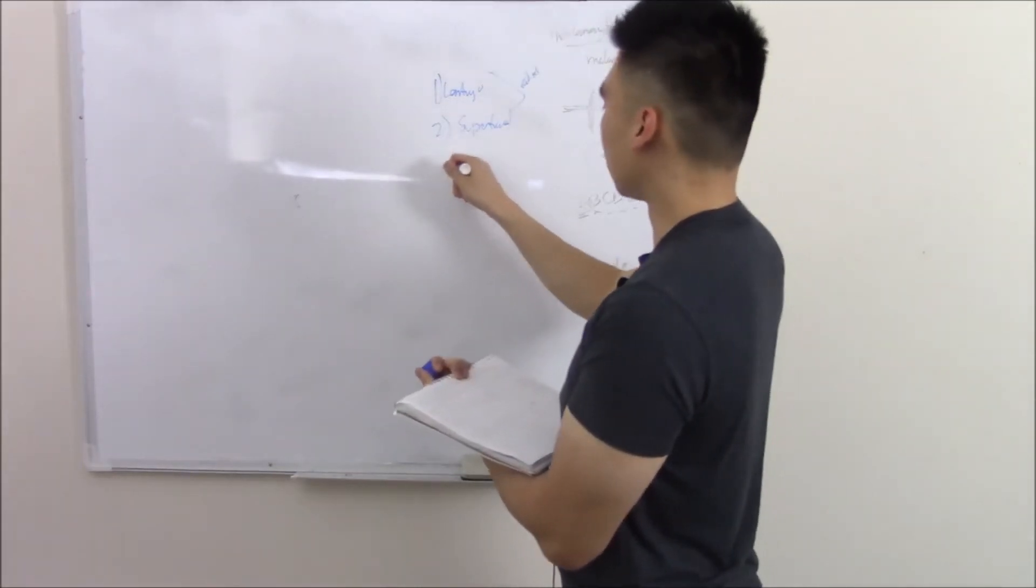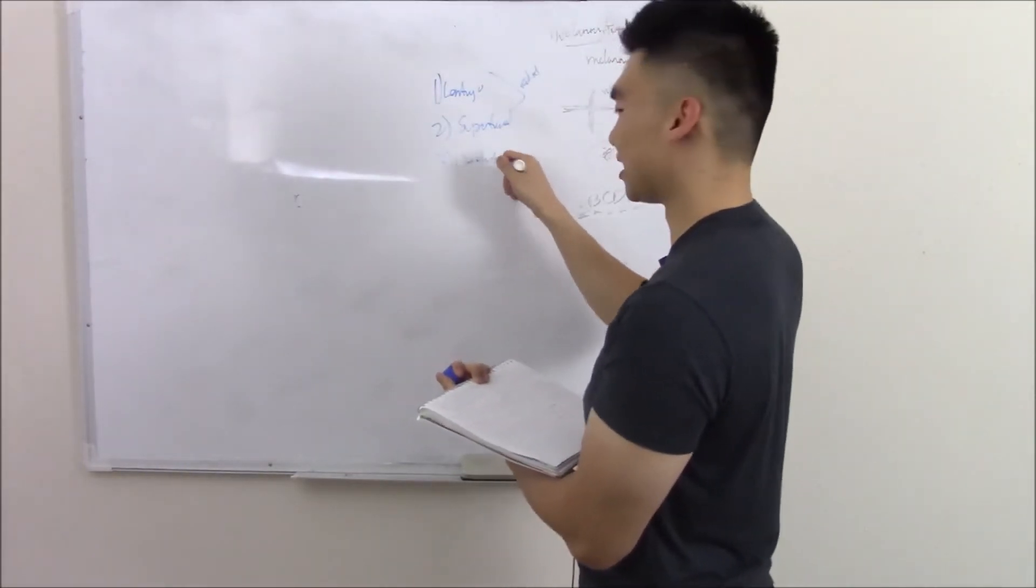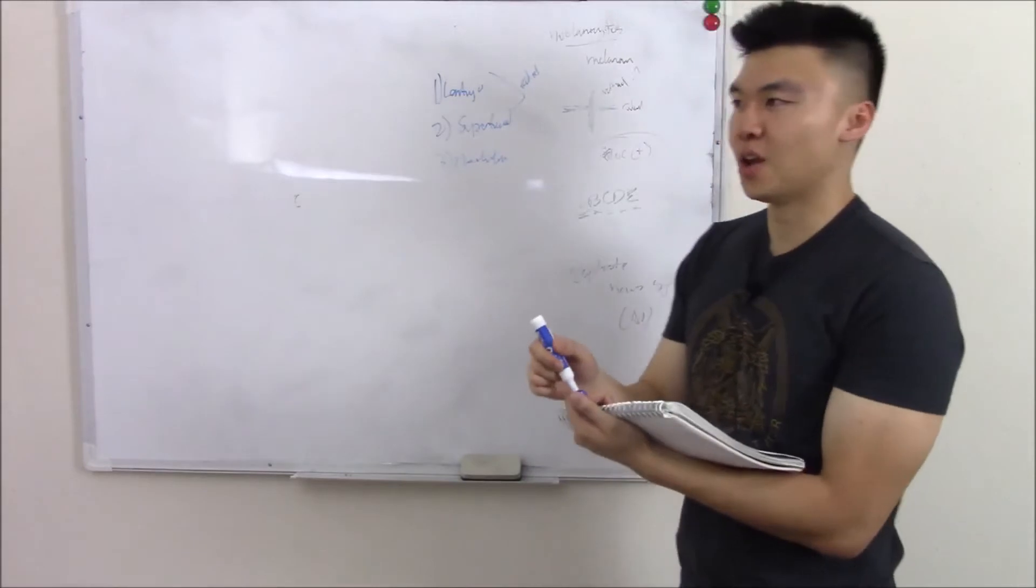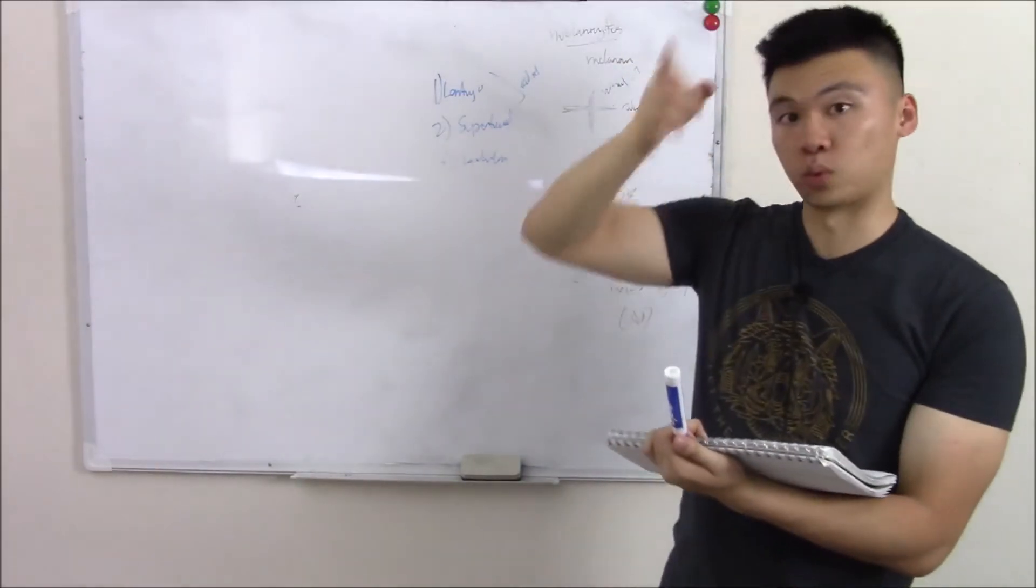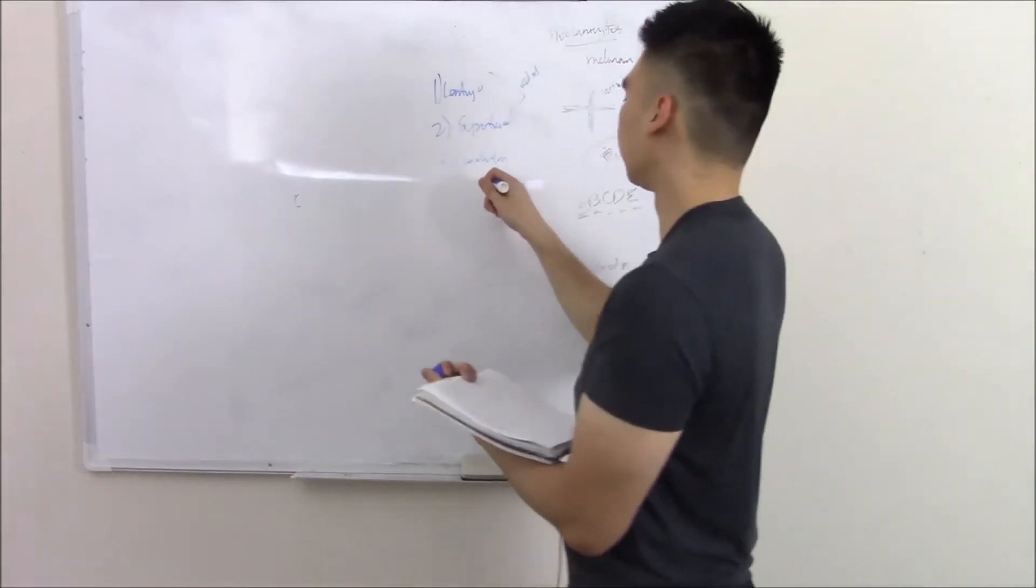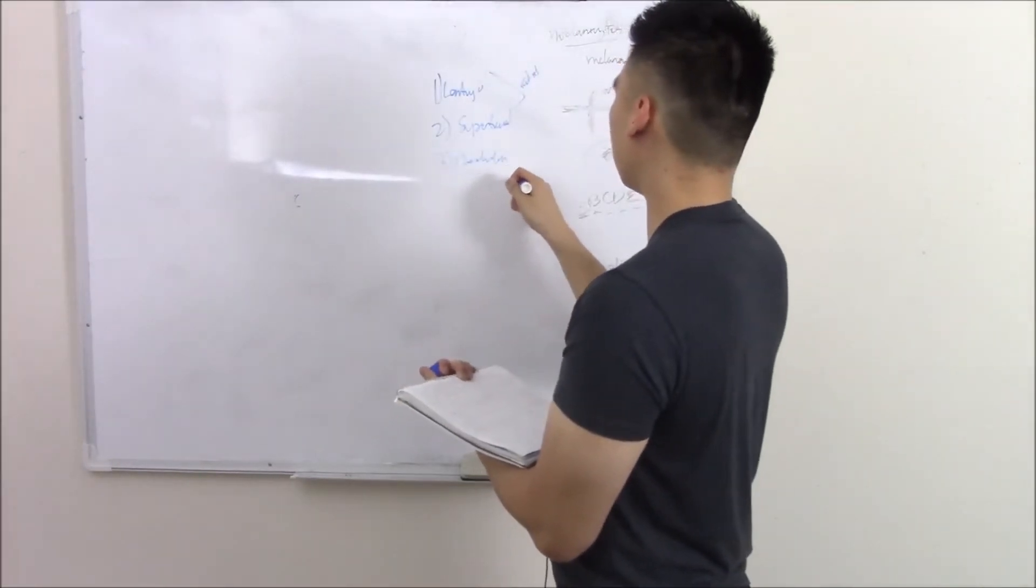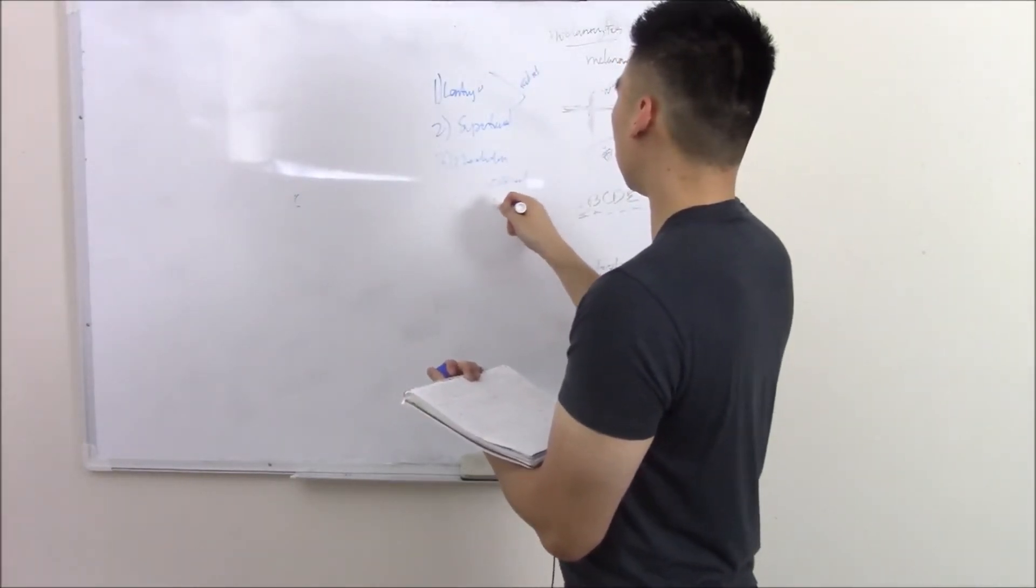The next one is nodular. You can tell by the word nodular. This is not going to be a flat one. This is going to be one that has a lot of vertical growth. And sure enough, it is. So it's more raised. And nodulars are more vertical growth and higher risk.